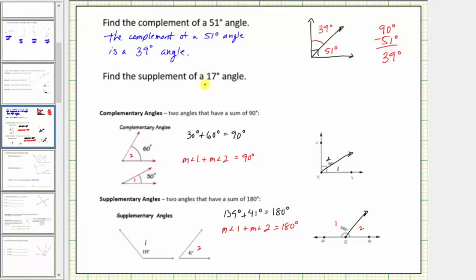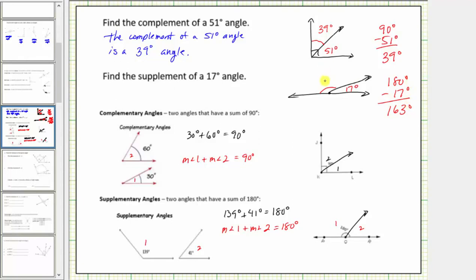Next we're asked to find the supplement of a 17 degree angle — which would be an angle that, if we add its measure to 17 degrees, equals 180 degrees. To model this, let's form a straight angle and break this up into two separate angles using this ray. Let's measure this small angle as 17 degrees. The measure of the other angle would be the supplement: 180 degrees minus 17 degrees equals 163 degrees. So the supplement of a 17 degree angle is a 163 degree angle.